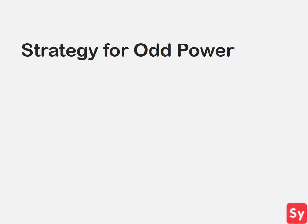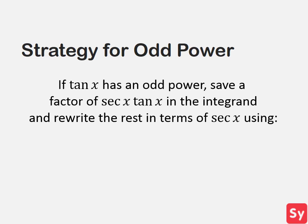We'll start by learning the strategy first and then follow it up with an example. Our first strategy is when tangent of x has an odd power. What we'll want to do first is take out and save a factor of secant of x times tangent of x in the integrand, and then rewrite the rest in terms of secant of x using this trig identity.